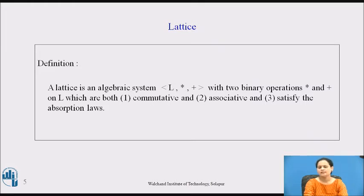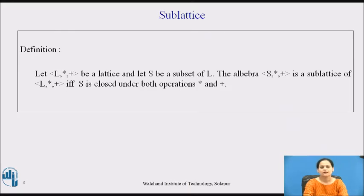Since we have described a Lattice as an algebraic system, we are now going to define a subsystem out of this, which will be termed a sub-Lattice. Let (L, *, +) be a Lattice and let S be a subset of L. The algebraic system (S, *, +) is called a sub-Lattice of (L, *, +) if and only if S is closed under the operations * and +.